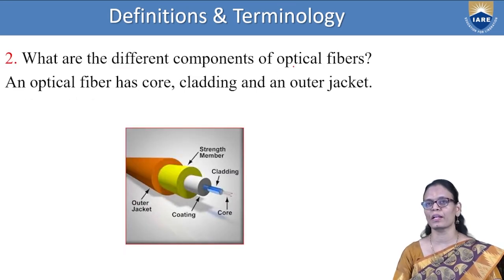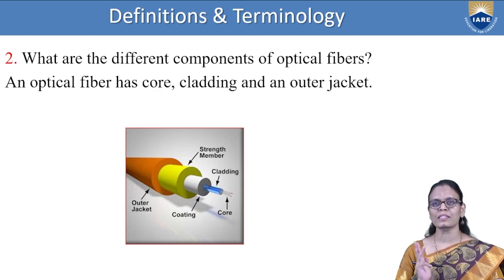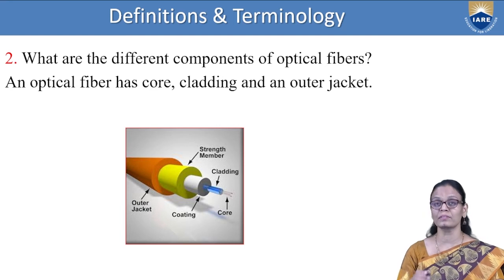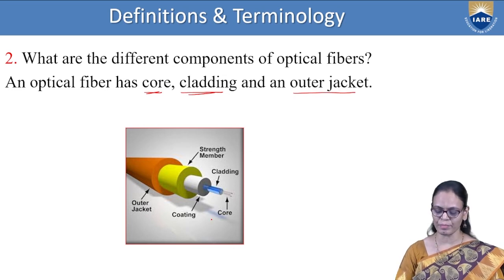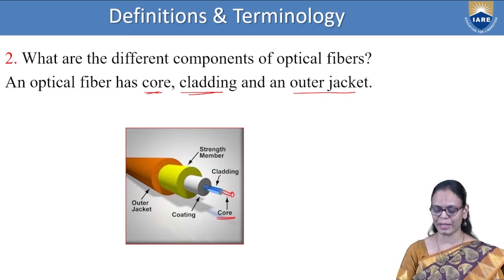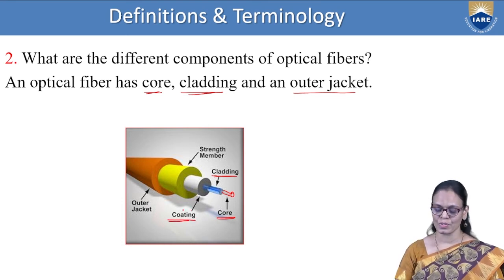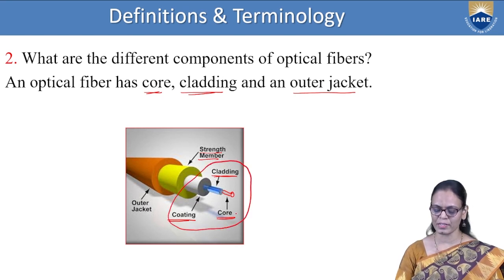What are the different components of optical fiber? There are three main parts: first is the core, second is the cladding, and then the outer jacket or outer coating. The core is surrounded by the cladding, and then the outer coating. There are other materials that give strength and protection, but the three main parts we are concerned with are the core, the cladding, and the outer coating.